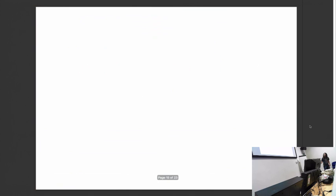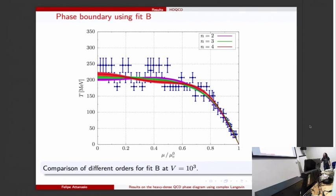Here I show the phase boundary using fit B for three different orders of the polynomial - the polynomial is an even function - so fourth order, sixth, and eighth order. You can see all the lines here look okay but using chi-squared analysis we saw that n equals two had the best chi-squared so we stuck to that one.